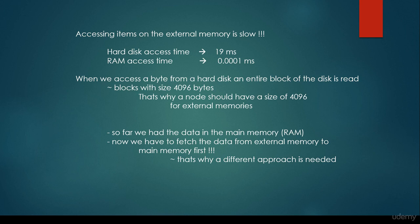Accessing items on the external memory is very, very slow, as we discussed in the previous video. For example, accessing items on the hard disk is approximately 19ms on average. As far as the main memory — the random access memory access time — is concerned, it is 0.0001ms. As you can see, it is much faster than the hard disk, the external memory.